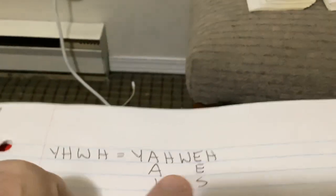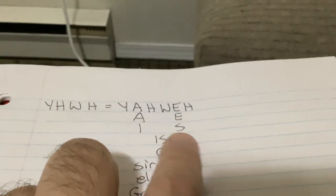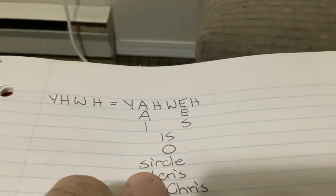Now apparently it's supposed to be Yahweh. And the missing letters are A, E, which is 1 and 5, or 15, which is an O, which is a circle, misspelled with an S, a circle.